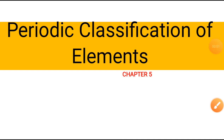Welcome back learners. We are starting chapter 5, which is Periodic Classification of Elements. All substances are made up of elements. Presently there are 118 elements known, out of which 98 are naturally occurring.